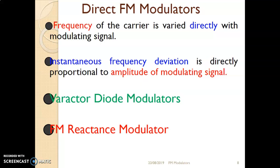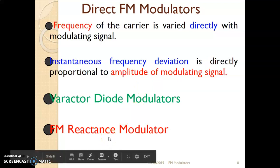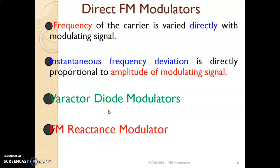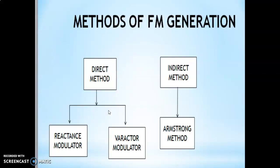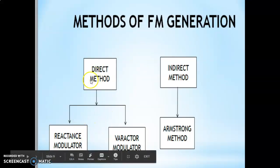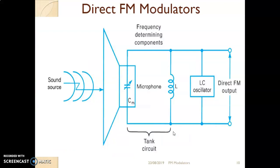Under the direct FM modulator, we will see two types of modulator: one is called the varactor diode modulator, another is called the FM reactance modulator. This is the classification chart — direct method has reactance modulator and varactor diode modulator, indirect method had the Armstrong method. Before starting with any type, let us understand the principle of direct FM modulator with the help of this diagram.